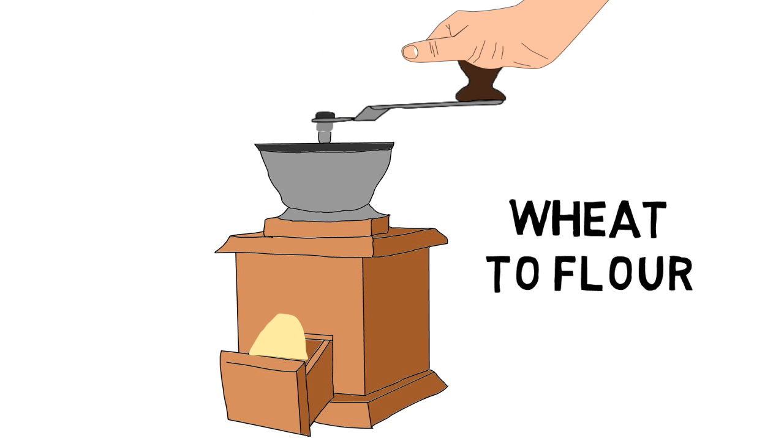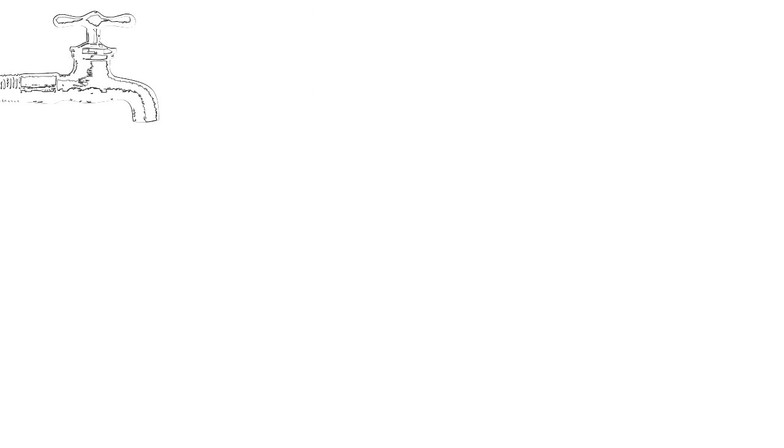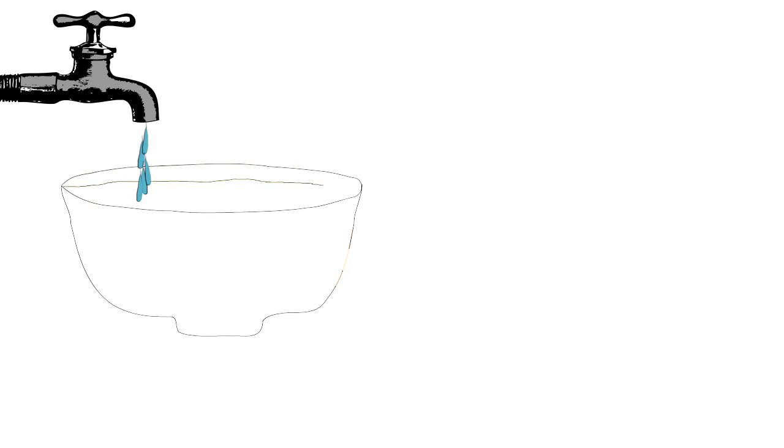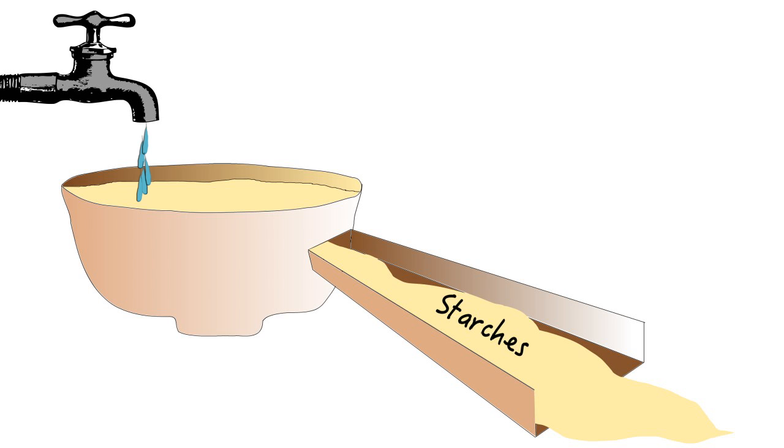After the harvested wheat is ground into a flour, it's washed with fresh, cold water, rinsing away the stuff you don't want, like starches, a.k.a. carbs.